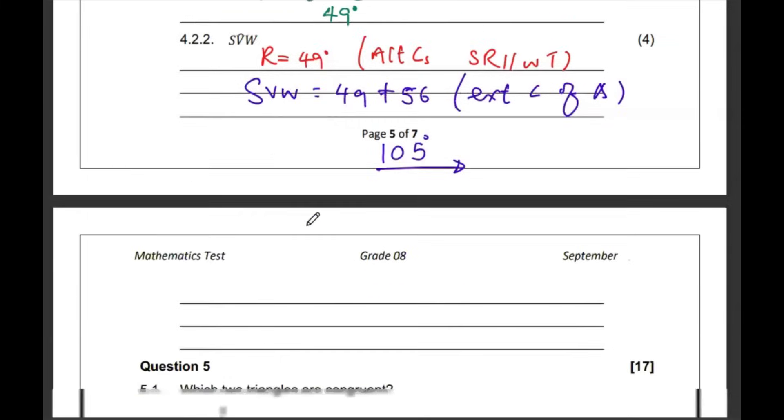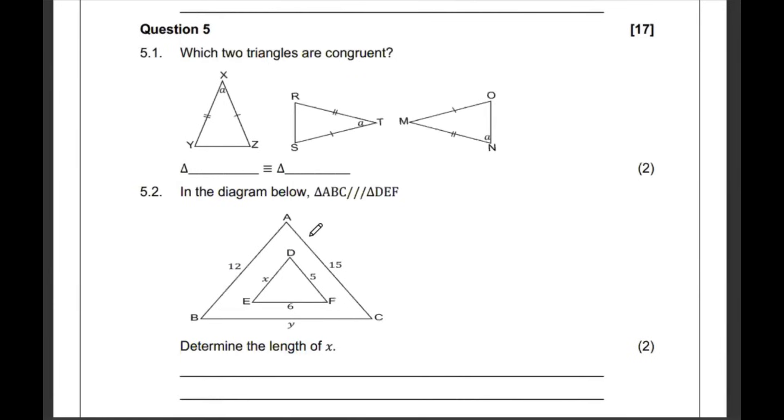Question number 5, they're asking us, between these triangles, which ones are congruent? Now, we know that triangles can only be congruent if they are identical in all ways. The angles are the same and the sides are also the same. So we can start by looking at the sides. All the triangles have the same sides. But then when you look at the angle, the angle is between the two marked sides. This angle is off. So, we're going to say that triangle XYZ is congruent to triangle RST.